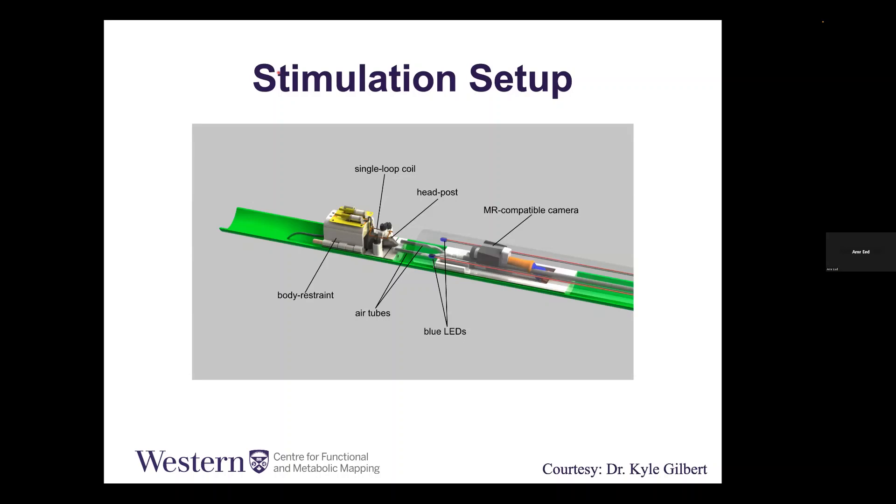The stimulation setup is pretty simple. I already covered this part about the coil and the mouse and the head post. We have our single loop coils that we use all the time, our body restraint, and the animal in the middle with the head post attached to the skull and the adapter bar. In front of the animal, here is our MR compatible camera, and on both sides we put two LEDs.